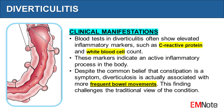Blood tests in diverticulitis often show elevated inflammatory markers, such as C-reactive protein and white blood cell count. These markers indicate an active inflammatory process in the body. Despite the common belief that constipation is a symptom, diverticulosis is actually associated with more frequent bowel movements. This finding challenges the traditional view of the condition.